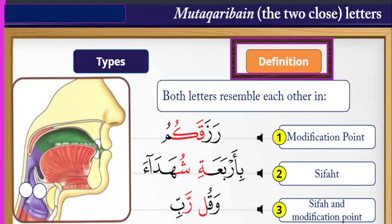Another example: لام and راء. What is the sifa shared by لام and راء? It is تَوَسُّط. Yes, it is tawasut. Both لام and راء produce their sound from the tongue — they share the same articulation point: the side of the tongue.